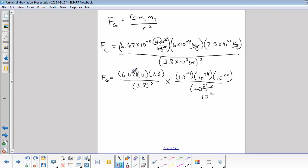So if you do this calculation, 6.67 times 6 times 7.3 divided by 3.8 squared, you would get 20.2. Okay, that's our first part.